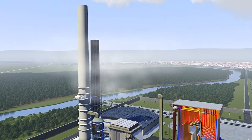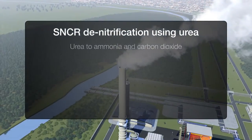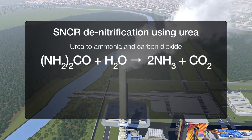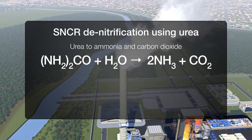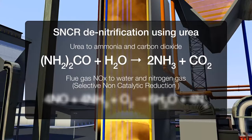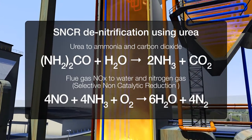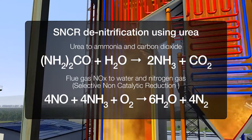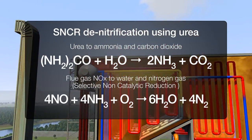Selective non-catalytic reduction (SNCR) plants are less efficient, removing around 70% of NOx, but use urea which is cheaper and easier to use than ammonia. The urea is added to the furnace to break the NOx down into nitrogen, carbon dioxide, and water.